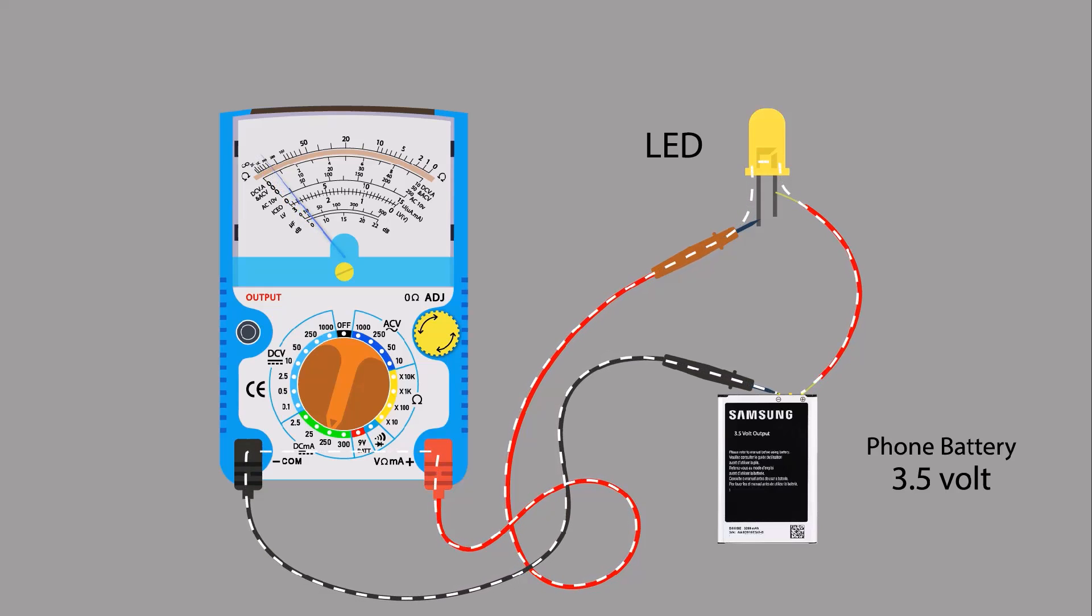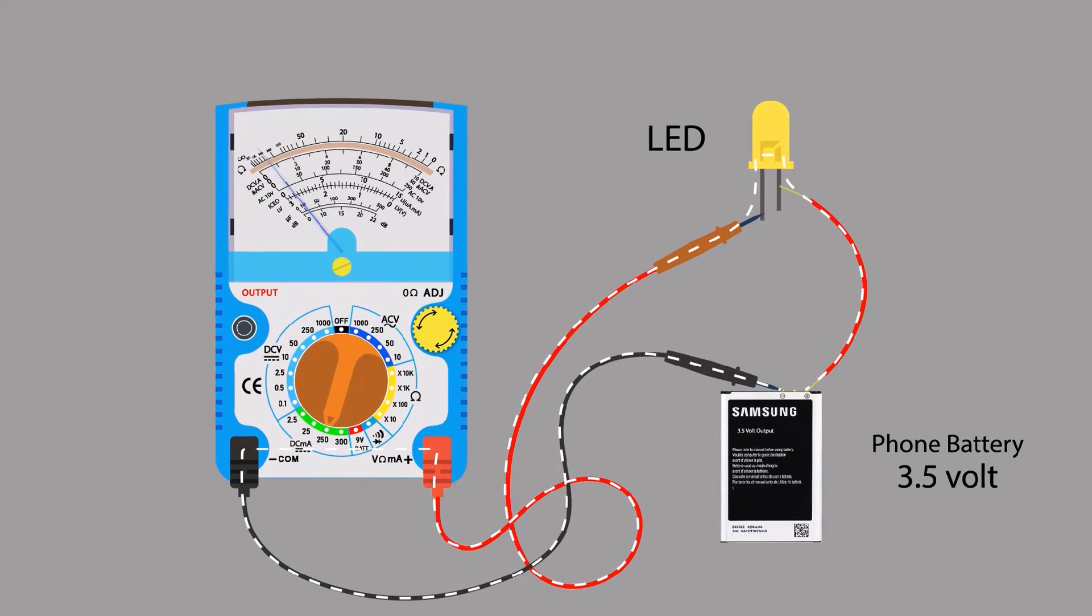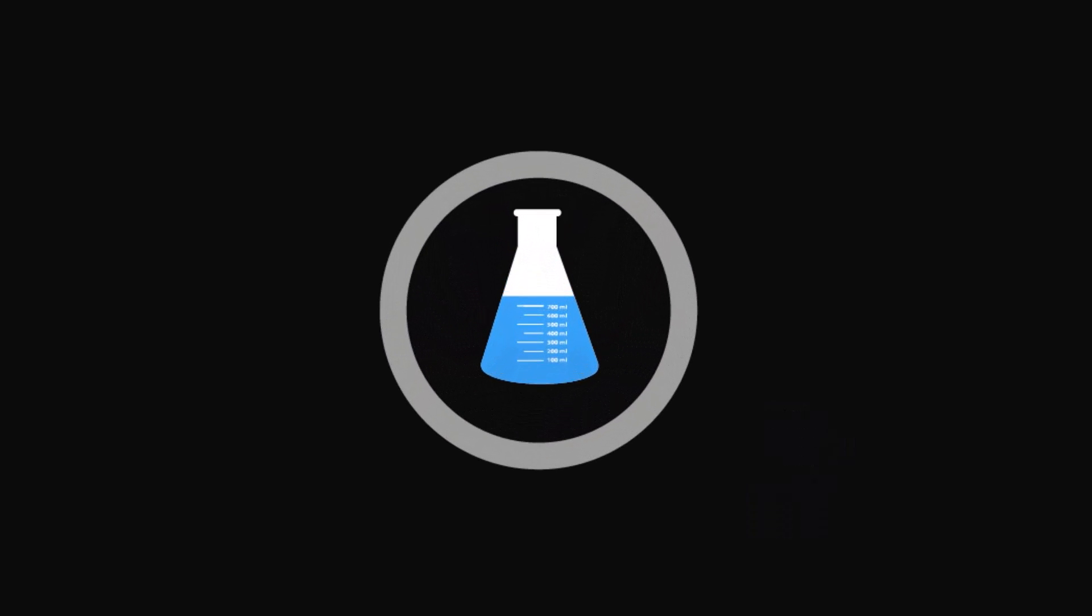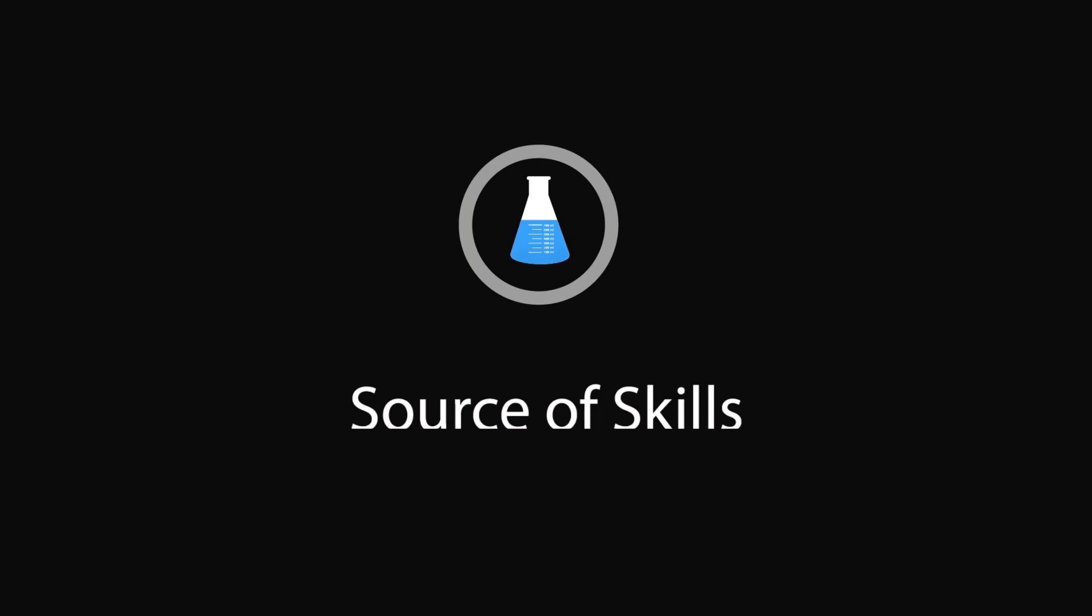In this animation you will learn how to measure DC current with the help of analog multimeter. Hello guys, welcome to our YouTube channel, Source of Skills. Please like and subscribe for more informative videos.